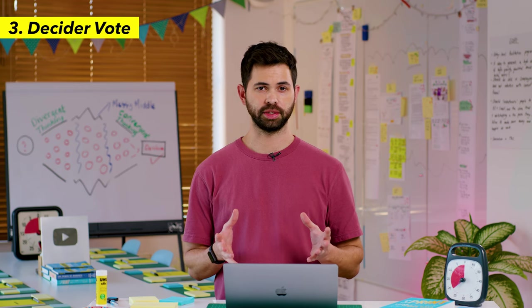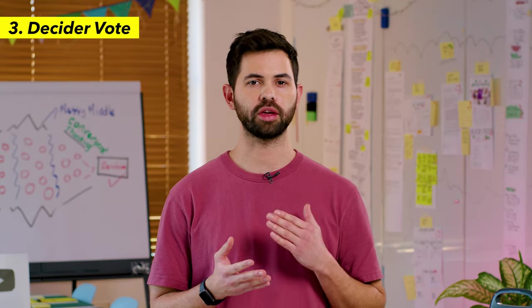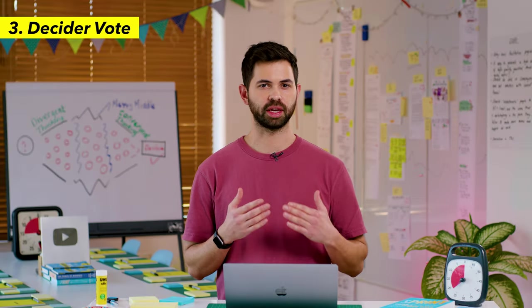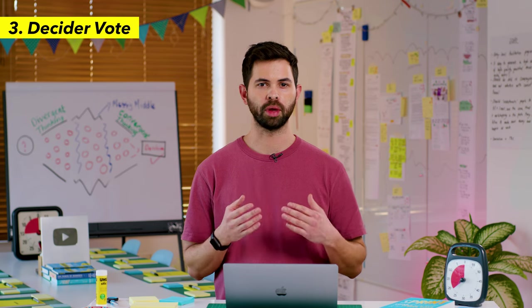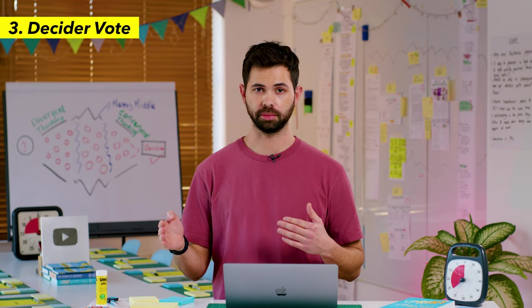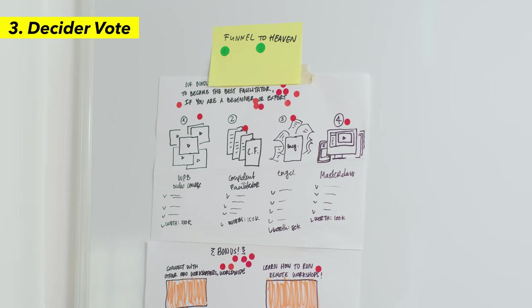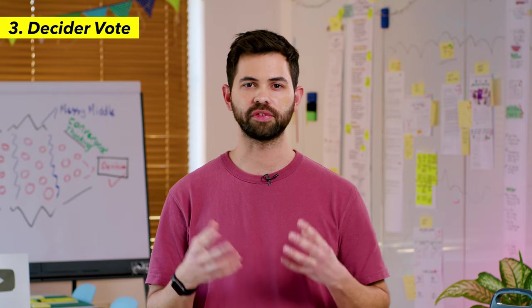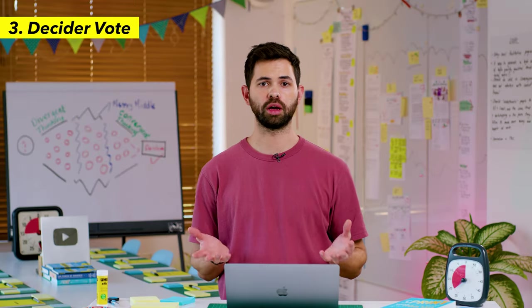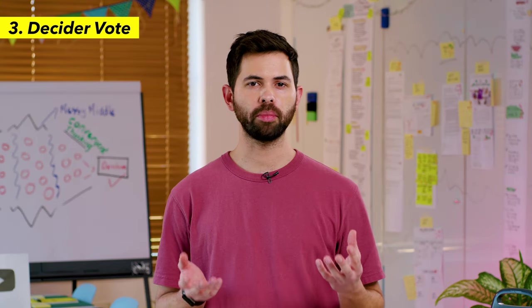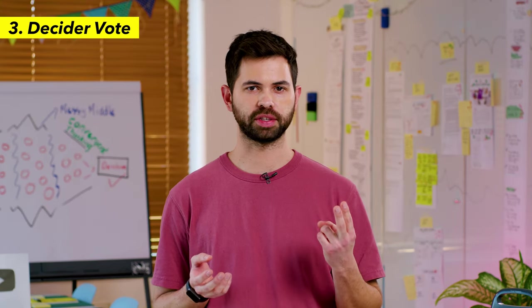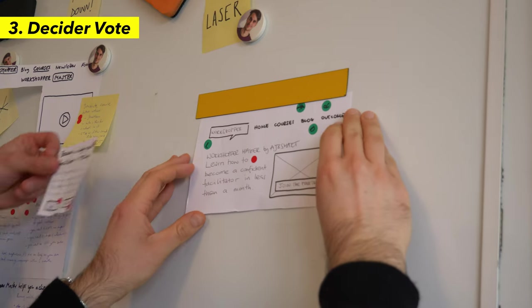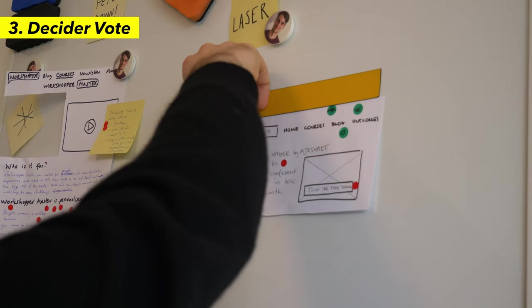Here's how you run this exercise: give the voting dots to your decider and tell them to take around 10 minutes to think about which concept they want to pick. During these 10 minutes they can consult the team, but once it's over they really have to make their decision. When the time is up, ask the decider to place their vote on the final concept they want to move forward with and briefly explain why to the whole team. Now that you've picked the concept, remember those extra two votes — the decider can take those highlighted elements from other concepts and tape them to the concept they chose.